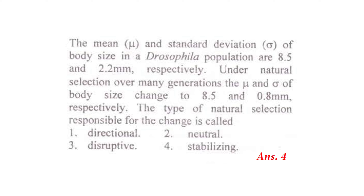Next: the mean and standard deviation of body size in a Drosophila population are 8.5 mm and 2.2 mm respectively. Under natural selection over many generations, the mean and standard deviation change to 8.5 mm and 0.8 mm respectively. The type of natural selection responsible is stabilizing, because the mean remains the same while the standard deviation decreases.